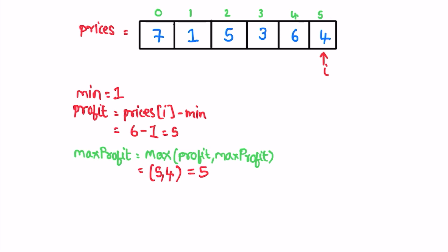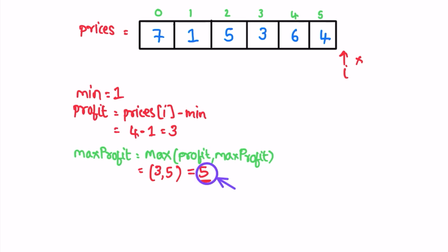Next iteration: current element is 4, which is greater than minimum, so minimum remains 1. Profit is 4 minus 1, which is 3. Current profit 3 is less than max profit 5, so max profit stays 5. We then reach the end of the array, exit the loop, and return whatever is inside the max profit variable as the output.